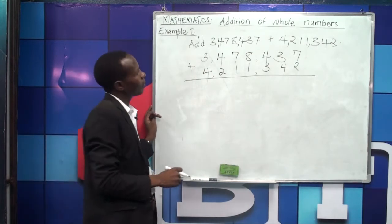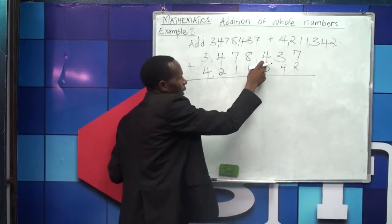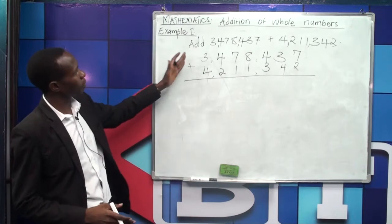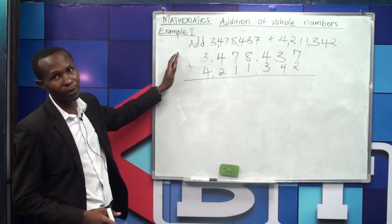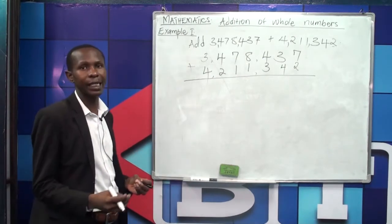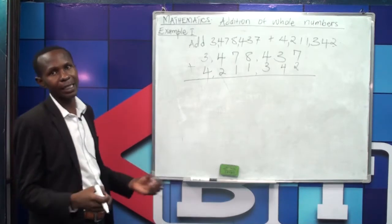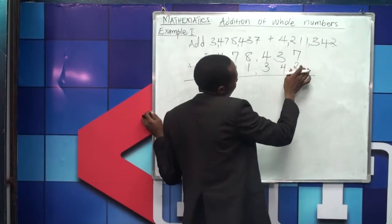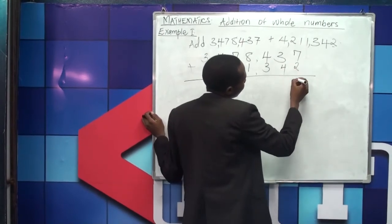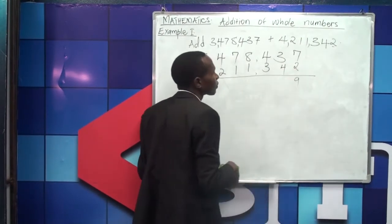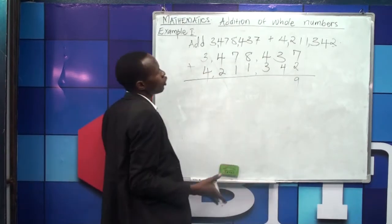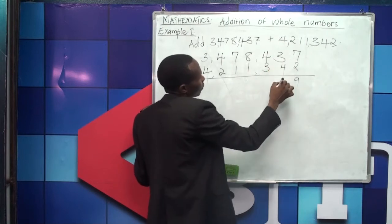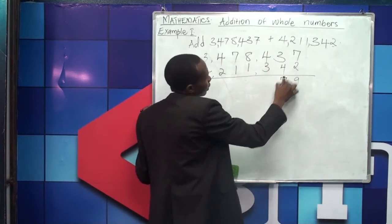After arranging our numbers according to their place values, we come to the ones side. We don't add beginning from the highest place value — we begin from the smallest place value, which is always ones. So we say 7 plus 2, which gives us 9. We continue to the tens place: 3 plus 4, which gives us 7.